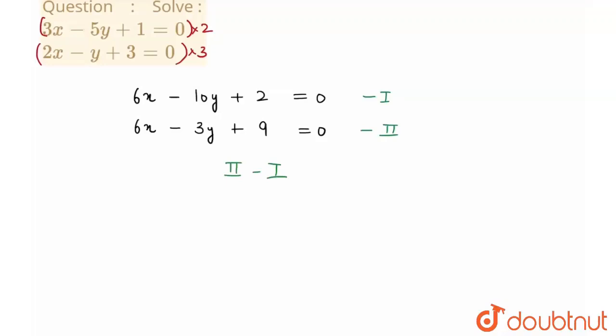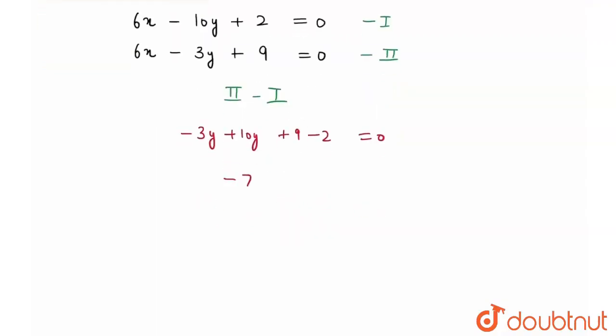My 6x terms will cancel out each other, right? So I'll get minus 3y plus 10y plus 9 minus 2 is equal to 0. Or I can say I'll get...